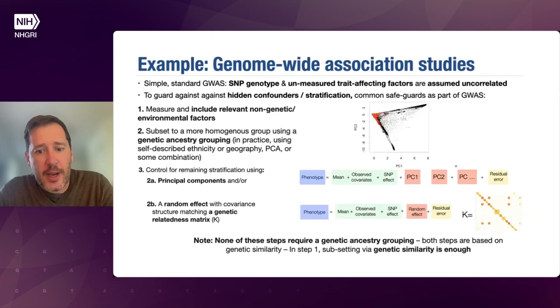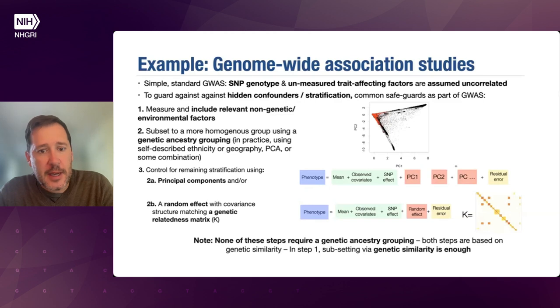It's enough just to use genetic similarity. One can create a group of individuals where there's a high level of similarity amongst the individuals and use that to form the grouping.